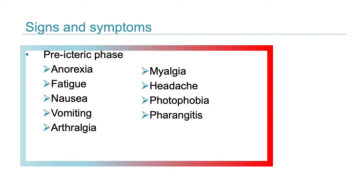The classic presentation of infectious hepatitis involves four phases. In phase 1, the viral replication phase, patients are asymptomatic but laboratory findings demonstrate serologic and enzyme markers of hepatitis. In phase 2, the prodromal or pre-icteric phase, patients experience anorexia, nausea, vomiting, alterations in taste, arthralgia, malaise, fatigue, urticaria, pruritus, and some develop an aversion to cigarette smoke.